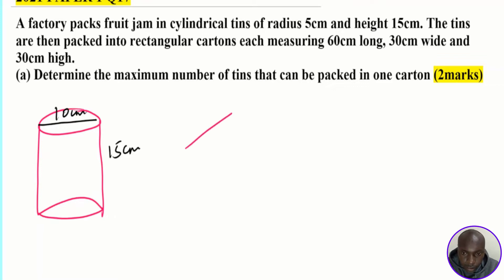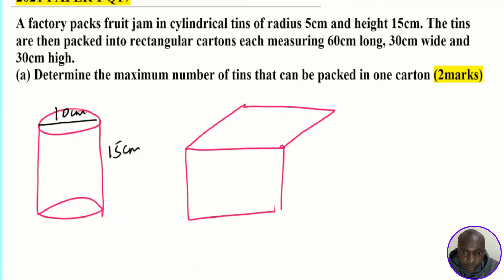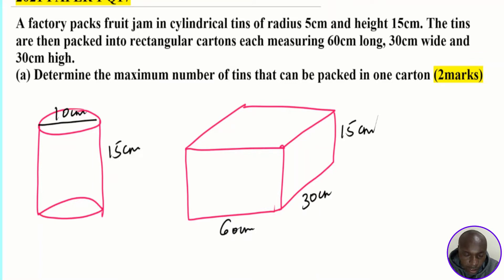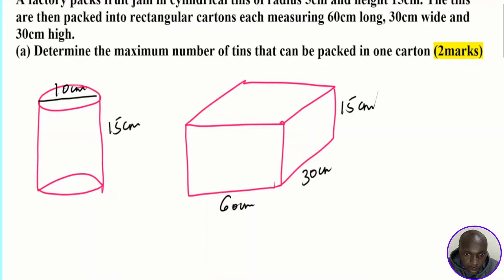Then we sketch the rectangular carton. The length is 60 centimeters, the width is 30 centimeters, and the height is 30 centimeters. To get the number of tins, we take the number of tins that will fit into the length.